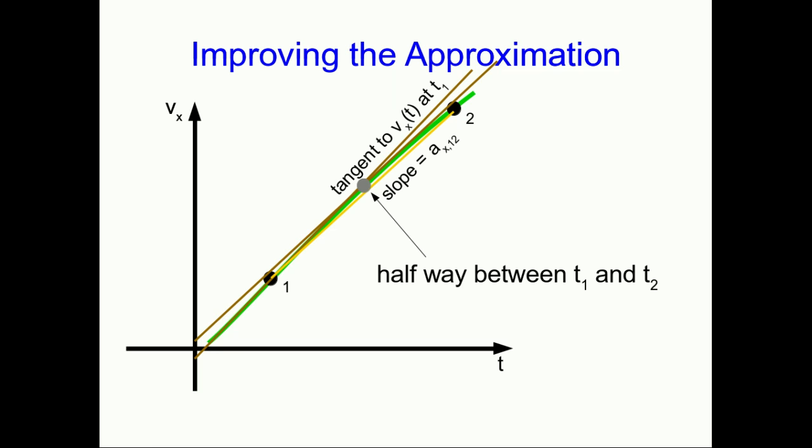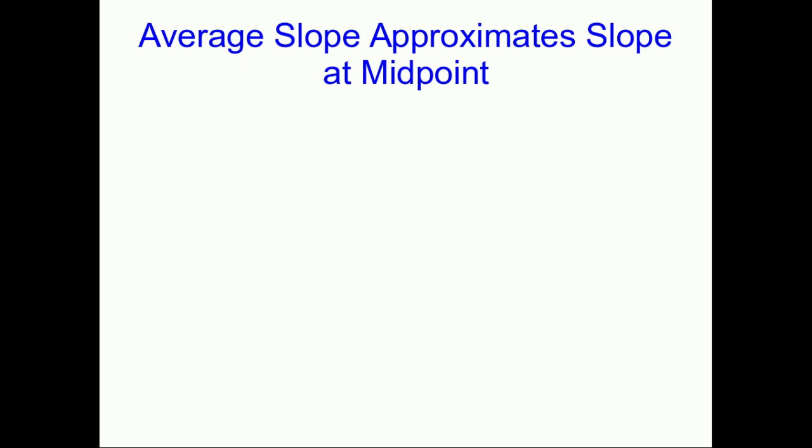So, we think this should give us an estimate for, in this case, the acceleration at a time halfway between t1 and t2. Those labels 1 and 2 are arbitrary, so we might as well call that point halfway in between t1.5, I guess. So, we're using an average slope to approximate an instantaneous slope at the midpoint between the two points used to get that average slope.